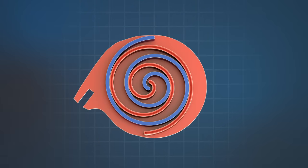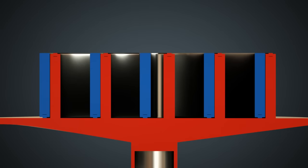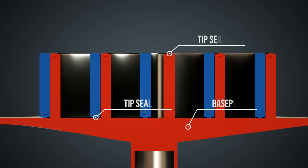Axial sealing can also be designed in various ways. One possibility is the use of a floating tip seal. These are present on both scrolls and are pressed against the base plates by gas pressure. In this animation, the upper base plate is not shown.